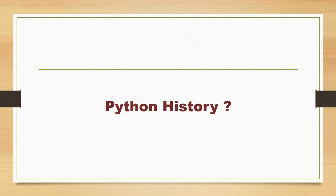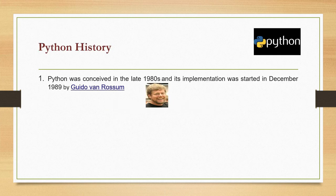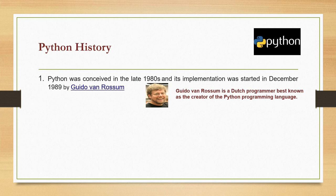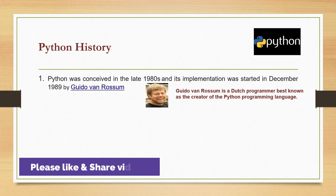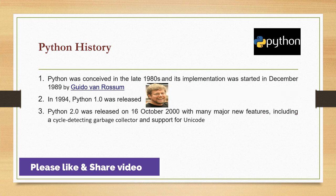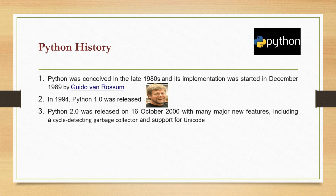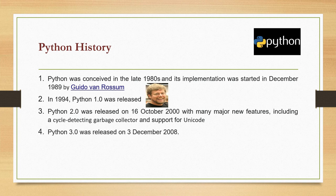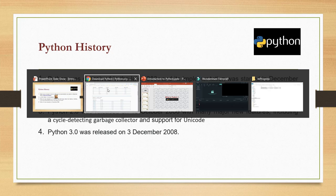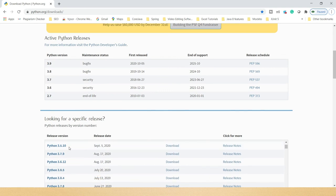Now let's talk about the history of Python. Python was conceived in the late 1980s and its implementation was started in December 1989 by Guido van Rossum, a Dutch programmer best known as the creator of the Python programming language — Dutch meaning he belongs to the Netherlands. In 1994, Python 1 was released. Python 2 was released in October 2000 with major new features including a cycle-detecting garbage collector and support for Unicode. Python 3 was released in December 2008 and is the latest major version.